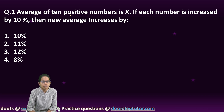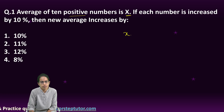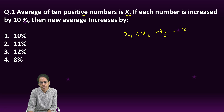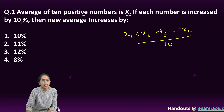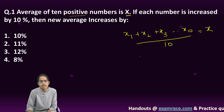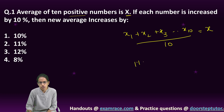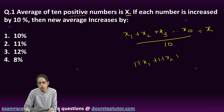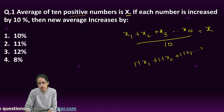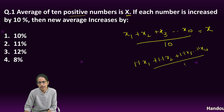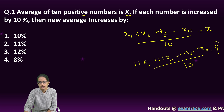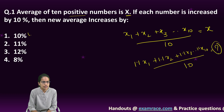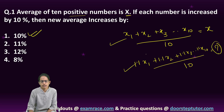The very first question says that the average of 10 positive numbers is x. So my numbers would be x1, x2, x3, and so on till x10, divided by 10, and the average is x. In the second case, if I increase each number as 1.1x1, 1.1x2, 1.1x3, and so on till 1.1x10, divided by 10, then my new average would increase by 10 percent. Just solve the equations — a very simple question.